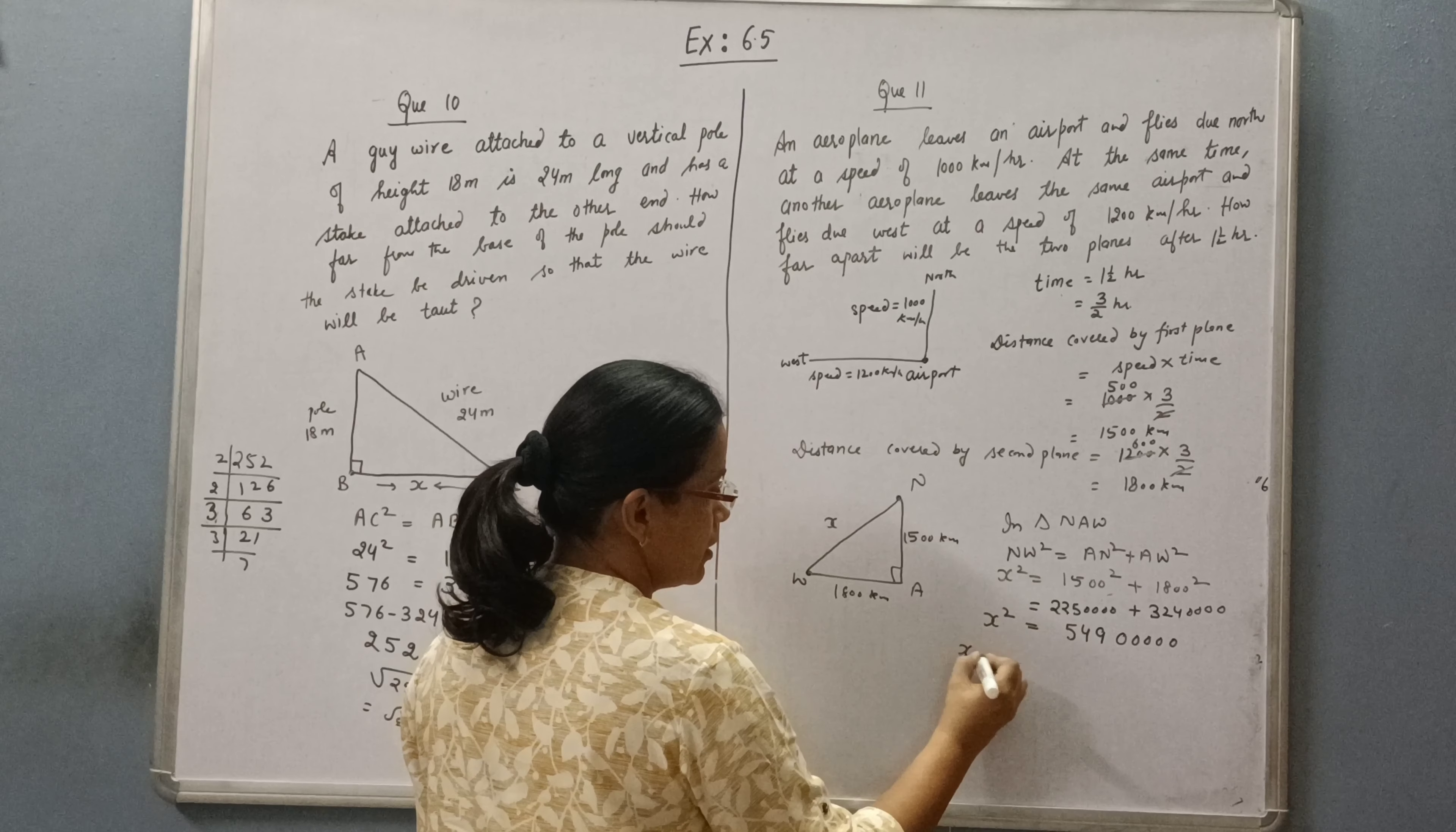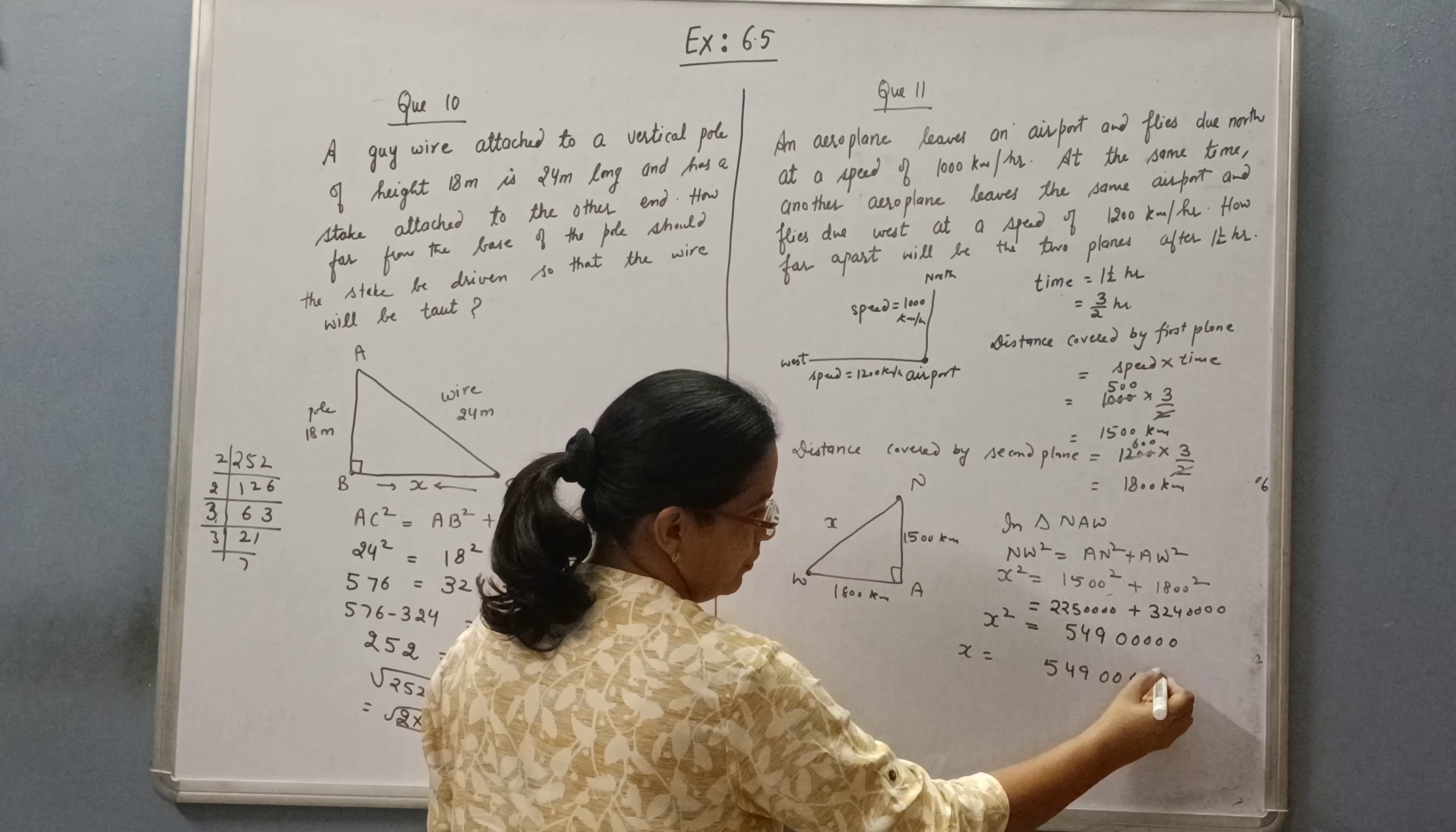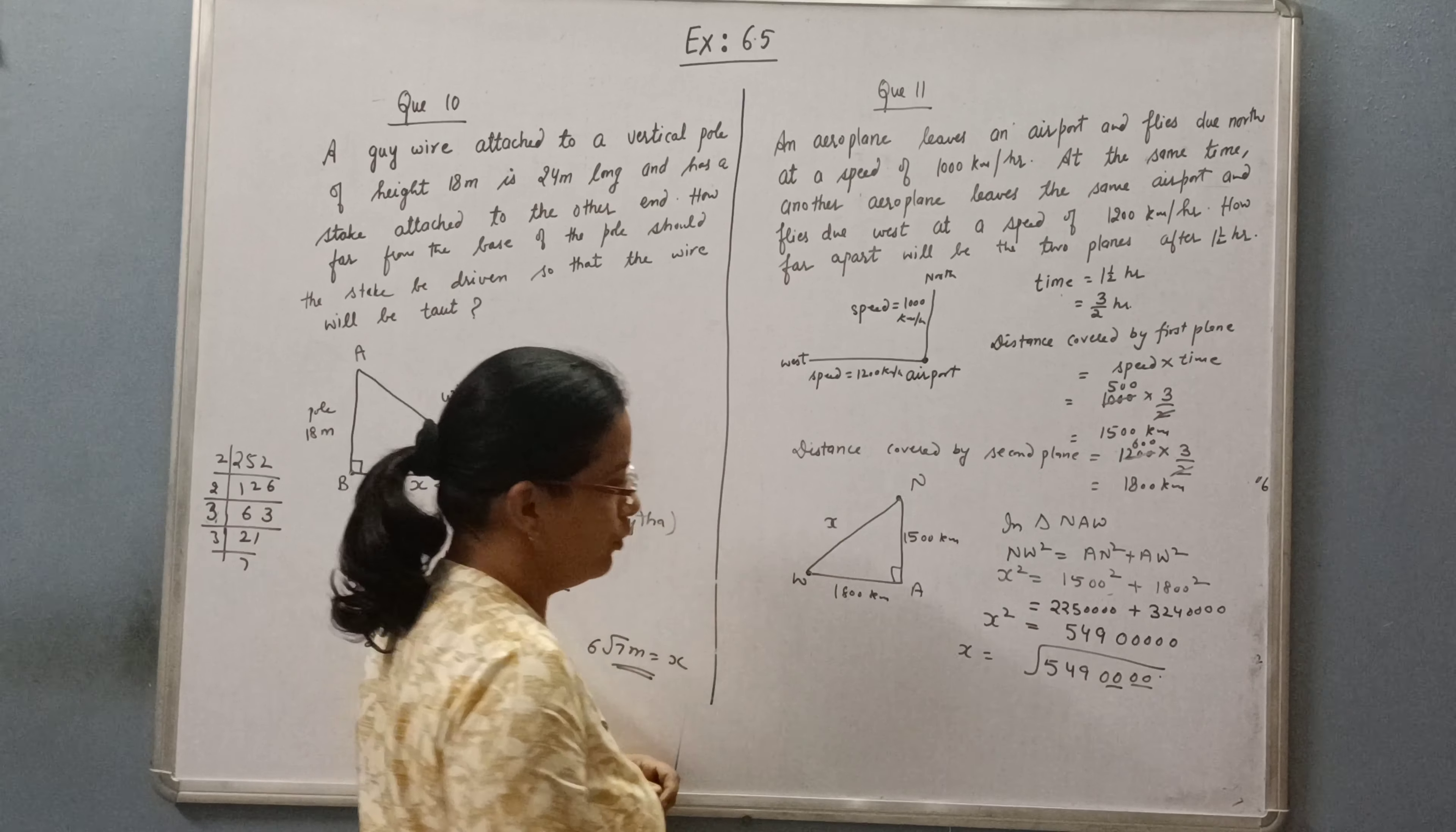So 5 plus 4 is 9, 2 plus 2 is 4, 2 plus 3 is 5. So we get 5490000. Now X equals square root of 5490000.